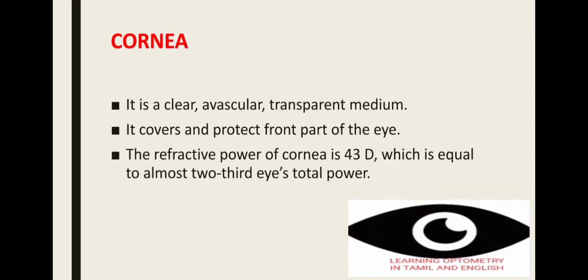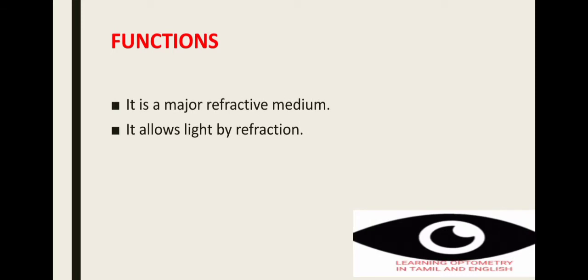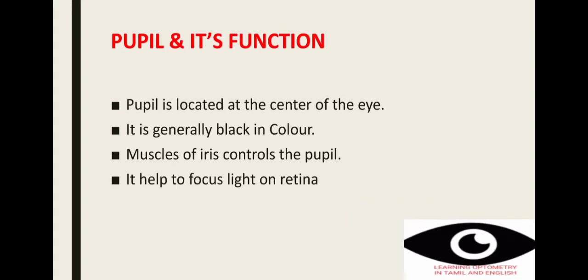Cornea covers the front part of the eye, protecting it. The total refractive power of our eye is 63 diopters, and the refractive power of the cornea is 43 diopters, which is almost two-thirds of the eye's total power. Cornea is a major refractive medium — it allows light by refraction.